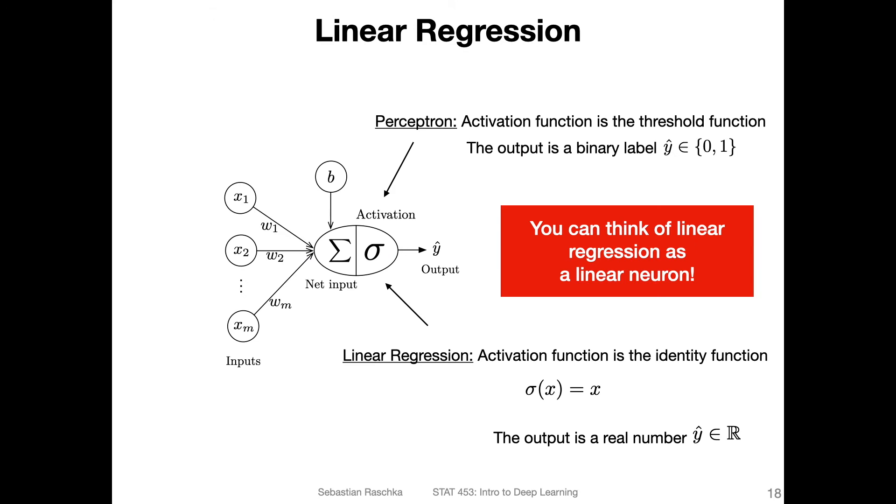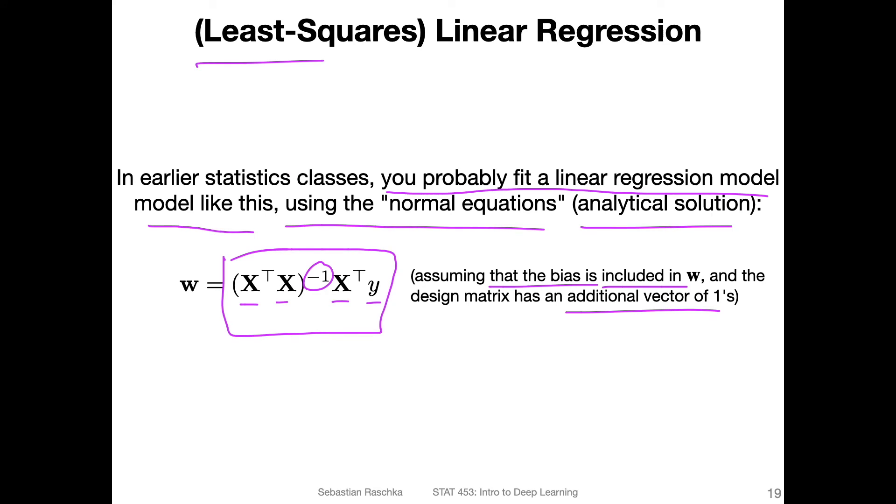Remember in the perceptron lecture, we had an alternative formulation where we didn't have a separate bias unit. If you add a one to the inputs, then the bias unit will be included in W. With this equation, you can solve for the parameters for linear regression in an optimal way.